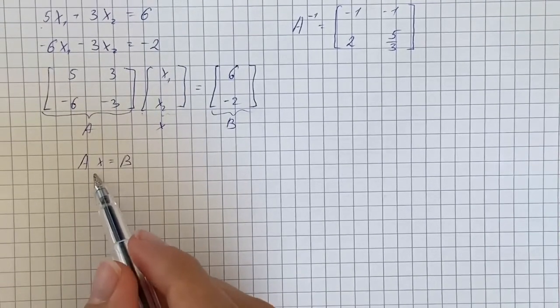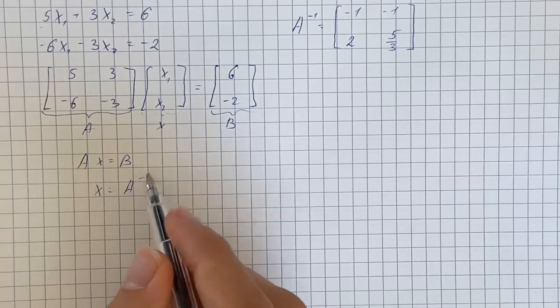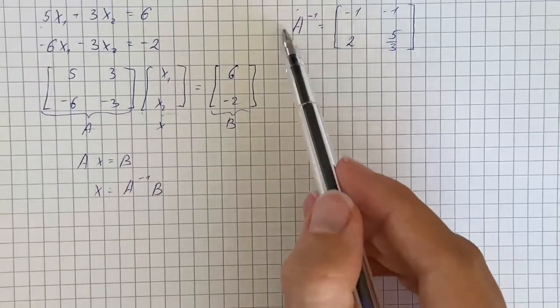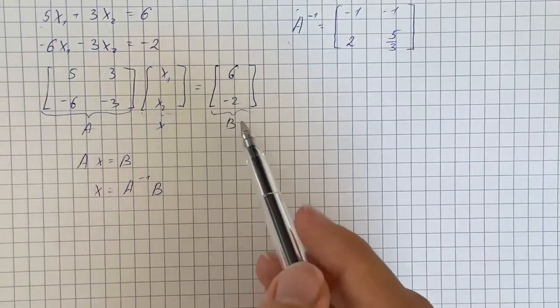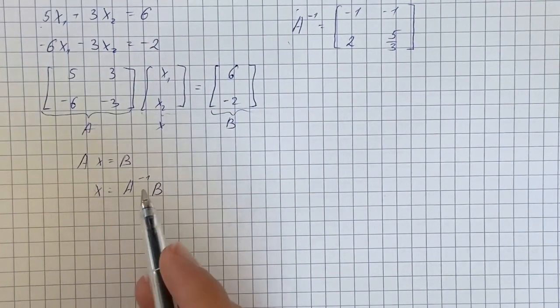And if we solve this for x we get that x equals A inverse B. So we were given A inverse and we know what is B, so we're going to find vector x.